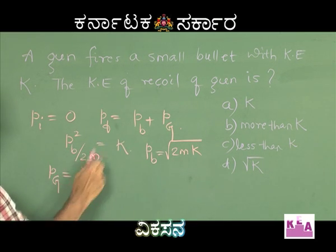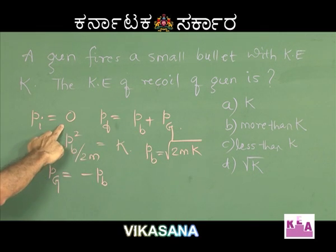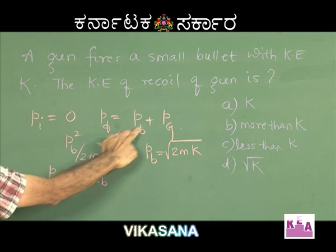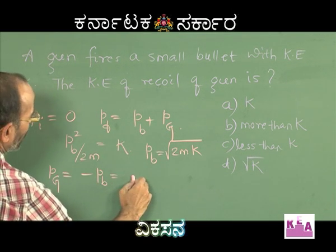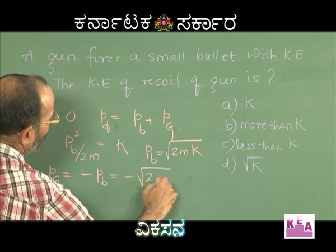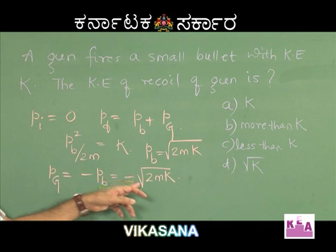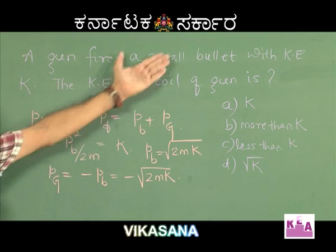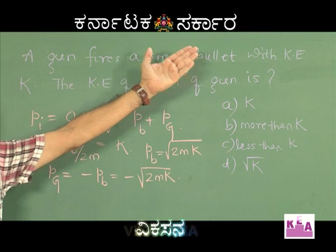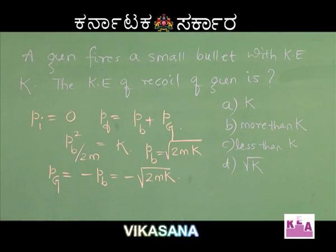The momentum of the gun will be minus the momentum of the bullet, because the initial momentum is 0. So you get the momentum of the gun as minus √(2mk). The minus sign means the gun recoils and its direction of motion is opposite to that of the bullet.